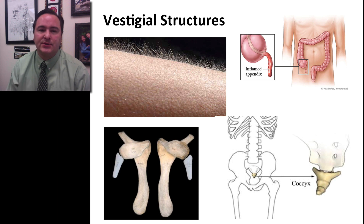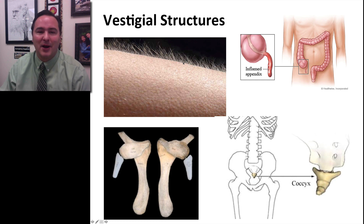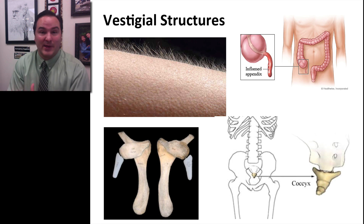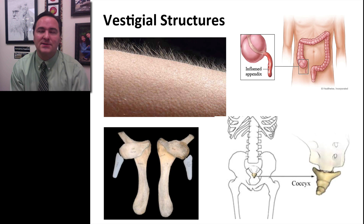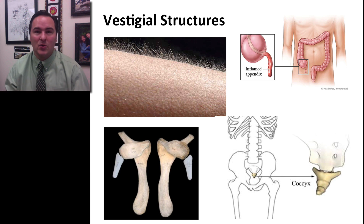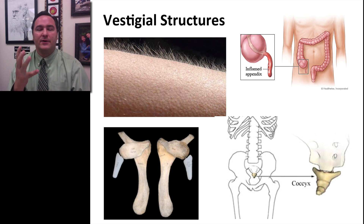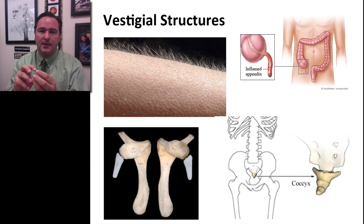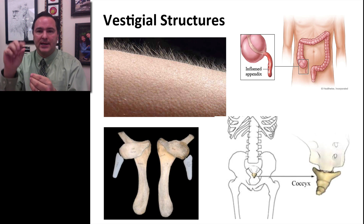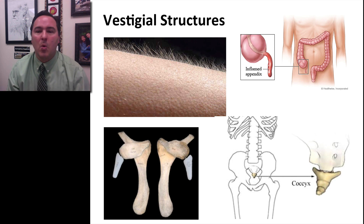Another interesting evidence is vestigial structures. For example, even in humans we have hair all over our body, and when we are scared or excited with adrenaline, or when we get cold, our hair stands on end and we get goosebumps. That is a vestigial response that occurs in other mammals. When other mammals are excited or cold, their hair stands on end, and in cold environments it allows isolation of cold air on the outside — the hair provides insulation to keep the animal warm. We still have these same types of responses in our bodies even though we're not covered with fur, just little tiny hairs.